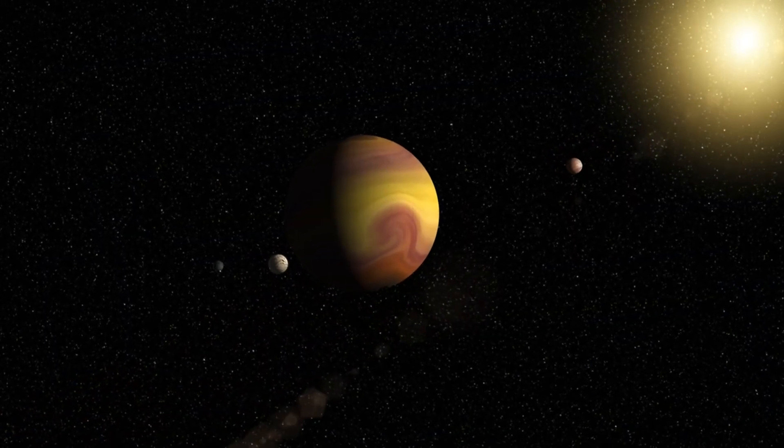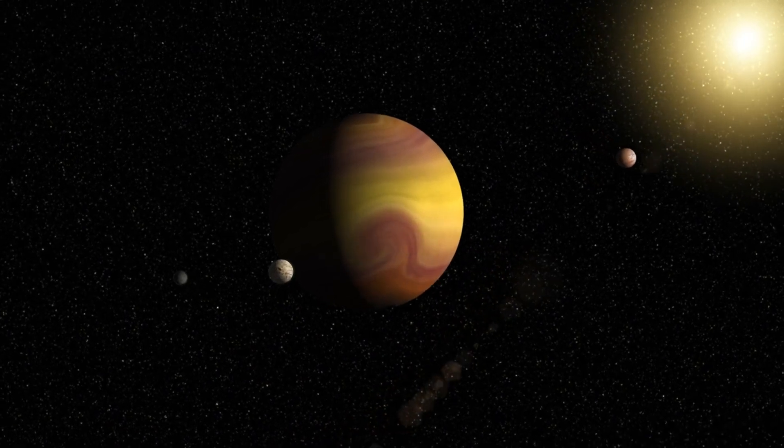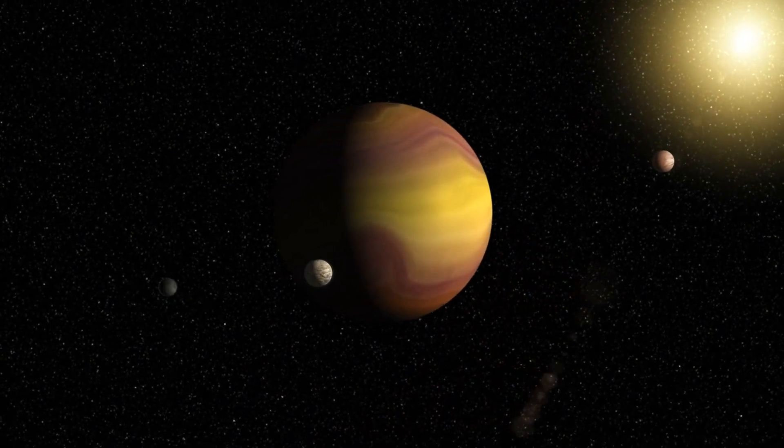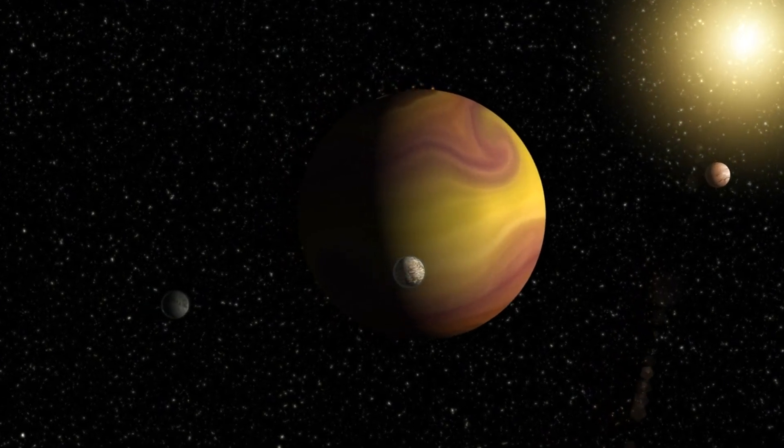This gas giant has a retinue of moons, including the four largest known as the Galilean moons, and a system of rings in addition to its potent magnetic field.